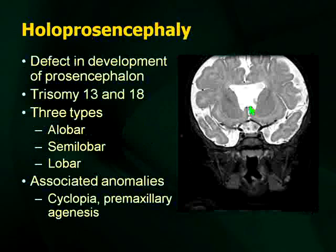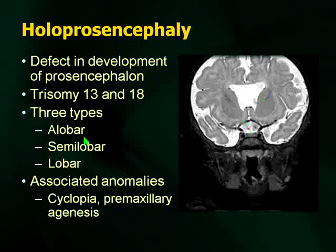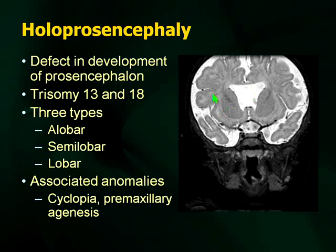Holoprosencephaly is another anomaly commonly quizzed upon. It's a defect in the development of the prosencephalon — when the brain and the thalamus and surrounding areas are being separated, there is a problem. You can get extremes: alobar, semilobar, and lobar. Lobar is where you have failure of division in the midline. The spectrum of holoprosencephaly is a midline problem with the brain, and you can get external manifestations — cyclopia and premaxillary agenesis. Trisomy 13 and 18 are associated with this.